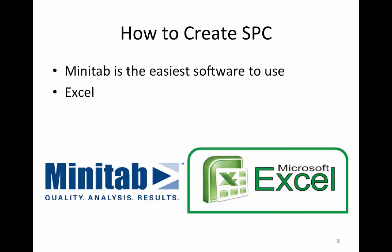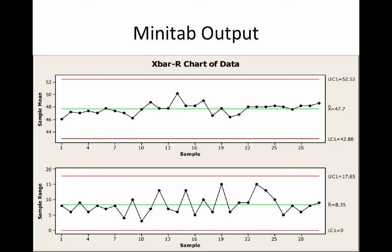So how would you create a statistical process control chart? Well, you can use Minitab or Excel. Minitab is really easy to use. You can use the help assistant in Minitab, and it'll tell you which control chart to use based on what data you have. You can also use Excel.